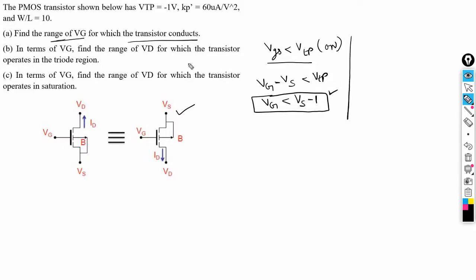Now let's move to the second part. We need to find out the range of VD in terms of VG so that the transistor is biased in the triode region. For the triode region, we know that VDS should be greater than VGS minus VTP.